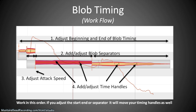The first thing I want to talk about is a hierarchy for adjusting timing attributes within a blob. First, adjust the beginning and end of a large blob, because when you adjust the ends it will move all the data within that blob. Second, add or adjust blob separators, which allow you to split blobs and create mini-blobs that also move all the data within them. Third, adjust attack speed, which will also adjust the time handles within the blobs.